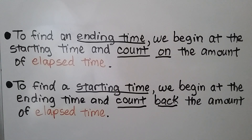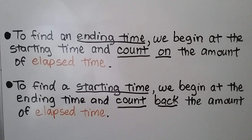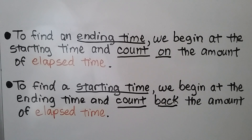To find an ending time, we begin at the starting time and count on — forward — the amount of elapsed time. To find a starting time, we begin at the ending time and count back — backwards — the amount of elapsed time.